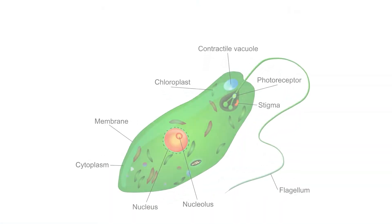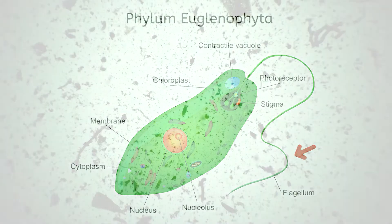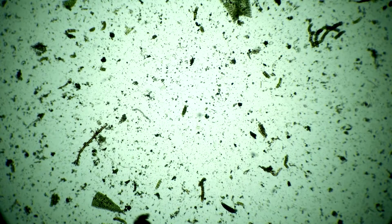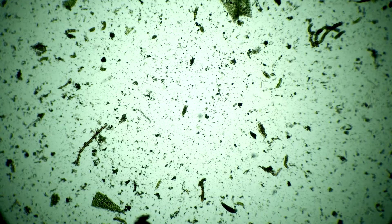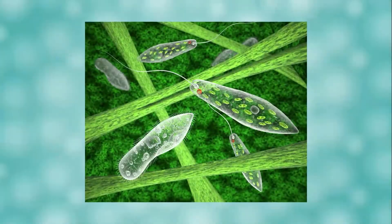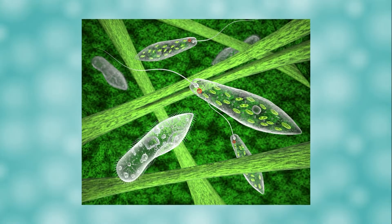Our first phylum, Euglenophyta, includes single-celled eukaryotes with flagella. These little speedsters are excellent swimmers, and Euglena such as these are considered to be the most animal-like of the plant-like protists.